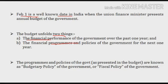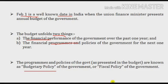So from the budget we get answers to these two things: what was the government's financial performance over the past one year, and what are the government's financial programs and policies for the next one year. These programs and policies that the government presents in the budget are called budgetary policy — also known as fiscal policy. Fiscal policy or budgetary policy refers to the policies and programs of the government that are presented in the budget.